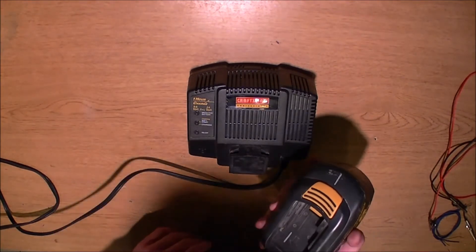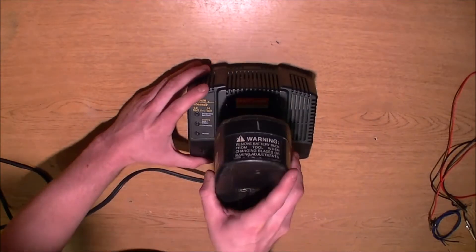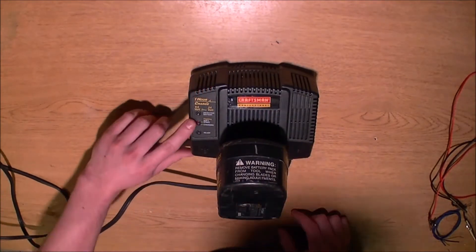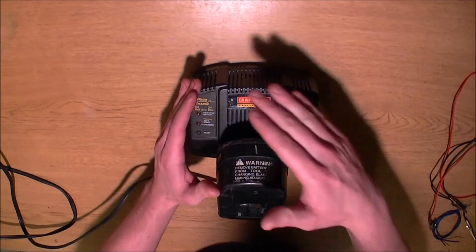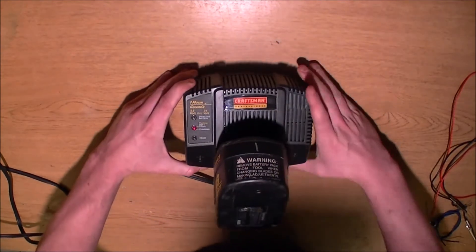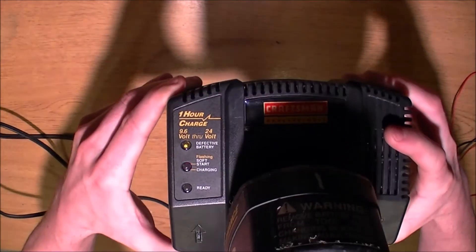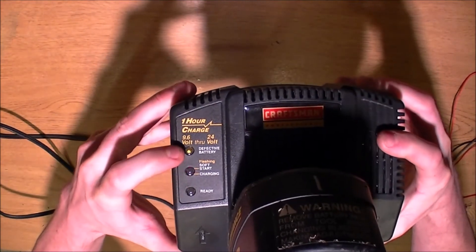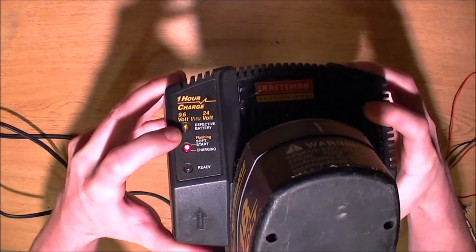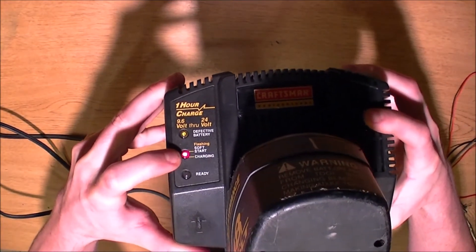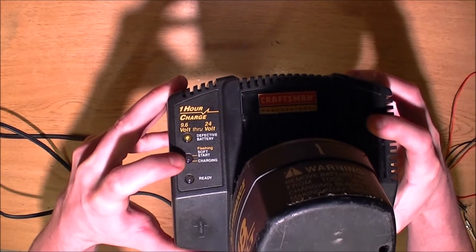Alright, so I go ahead and put this battery on and it says it's a defective battery. As you can see, maybe it needs to be a little darker but the defective battery light is on right here and it's blinking which is soft start and it never starts.